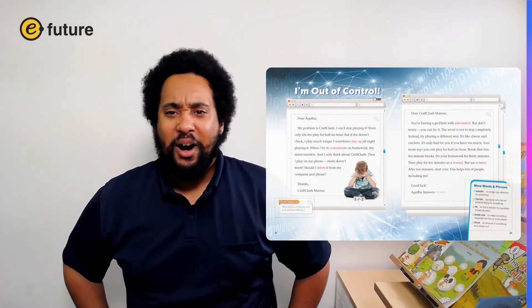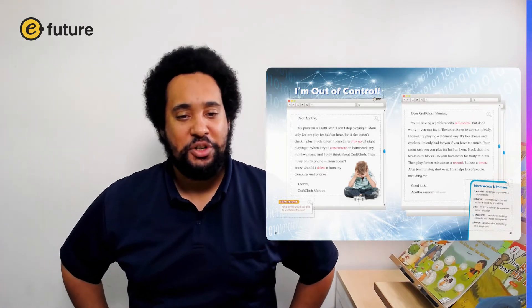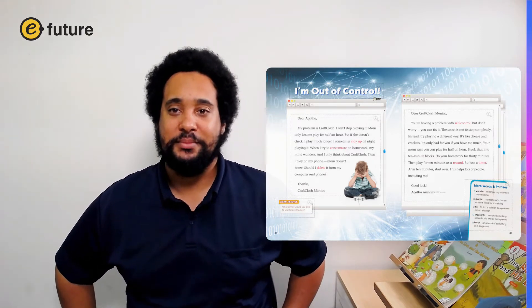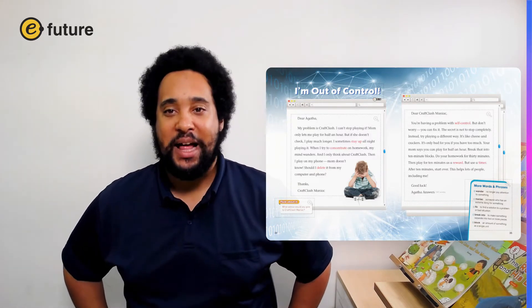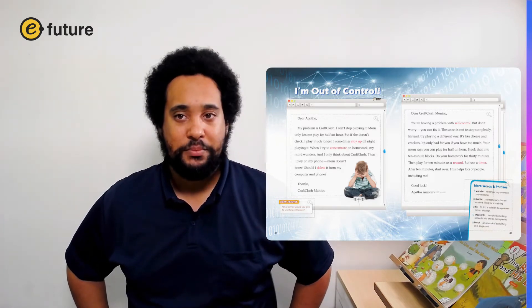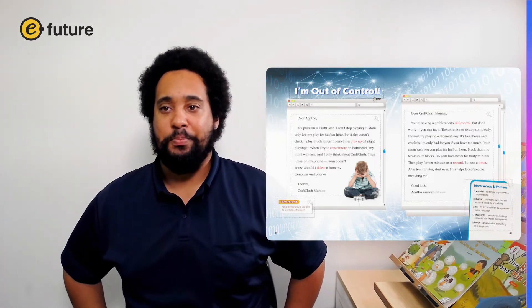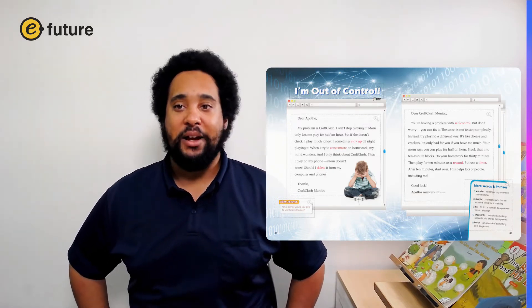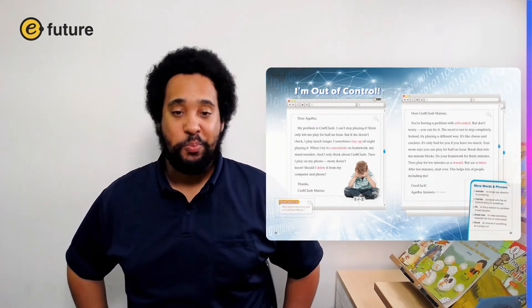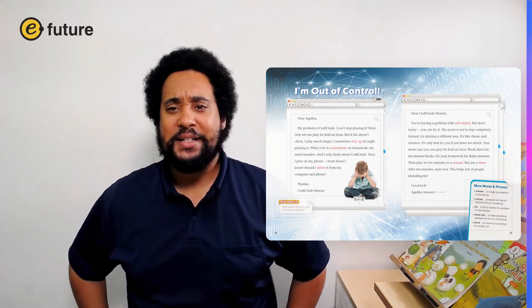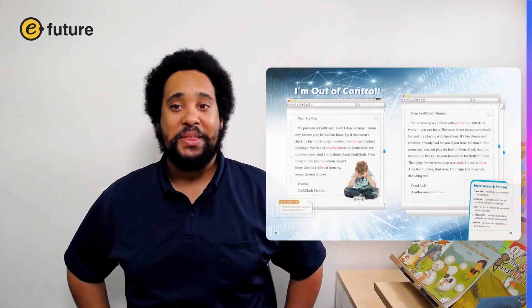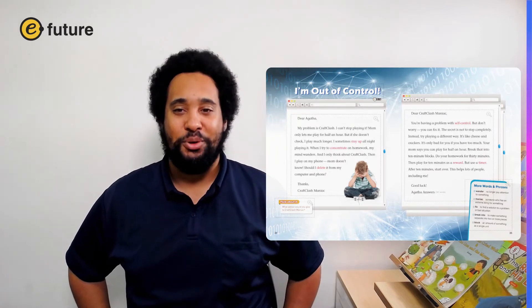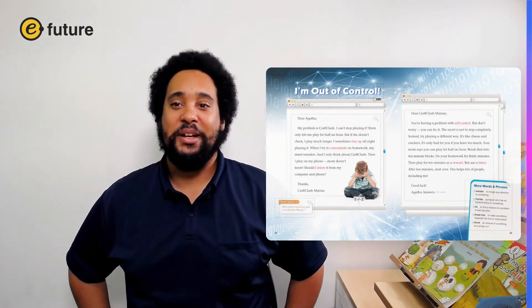Okay. Now, how is this story told? It's told in a very interesting way because it is told in the form of two emails. Who writes the first email? That's right. It's somebody named craft clash maniac. Is that the person's real name? No. This is called a nickname. It is used so the person doesn't have to share their real name. Now, why does craft clash maniac write his email? Right. He wants help with a problem. So who tries to help craft clash maniac? It's Agatha Answers. What kind of name is Agatha Answers? Yes, it's a nickname too.